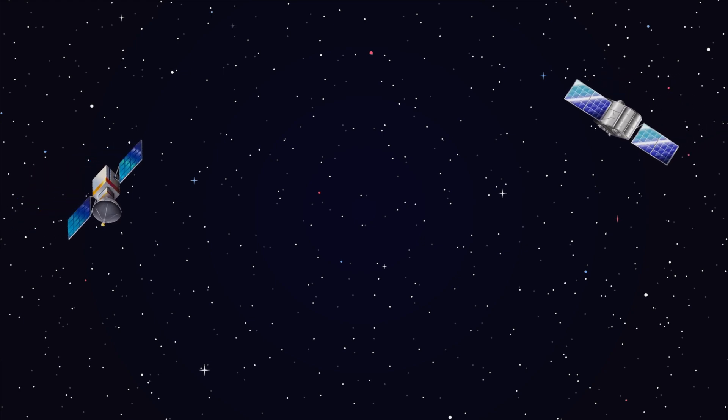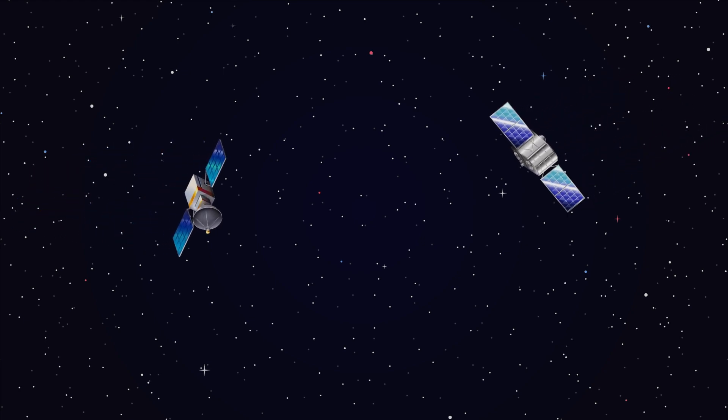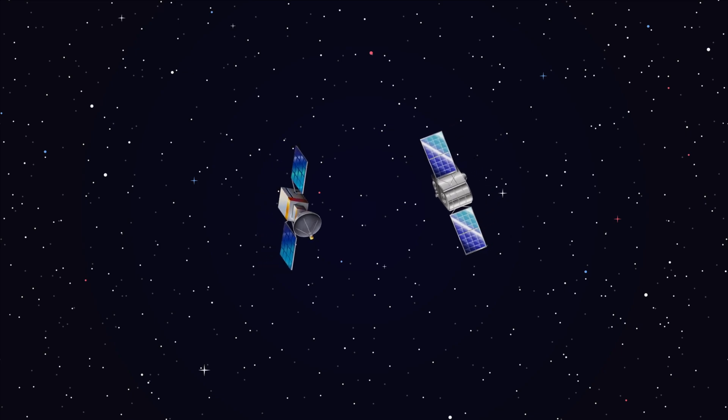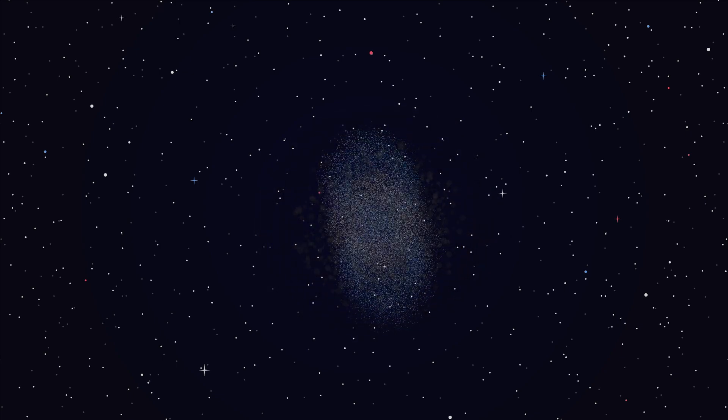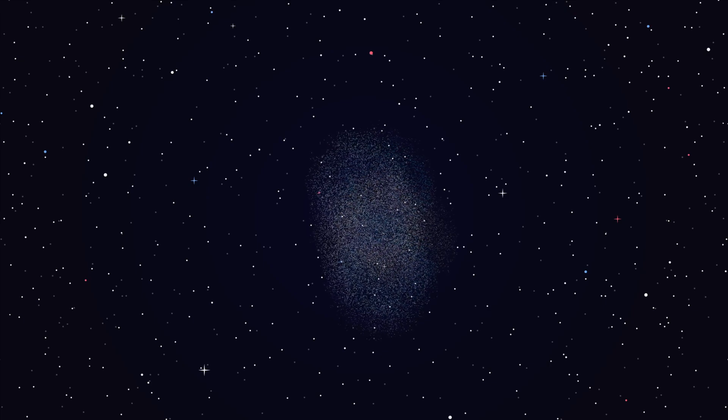Some of the space debris is also from the results of collisions. For instance, when two satellites collide, they can smash into thousands of smaller broken pieces, creating more debris.